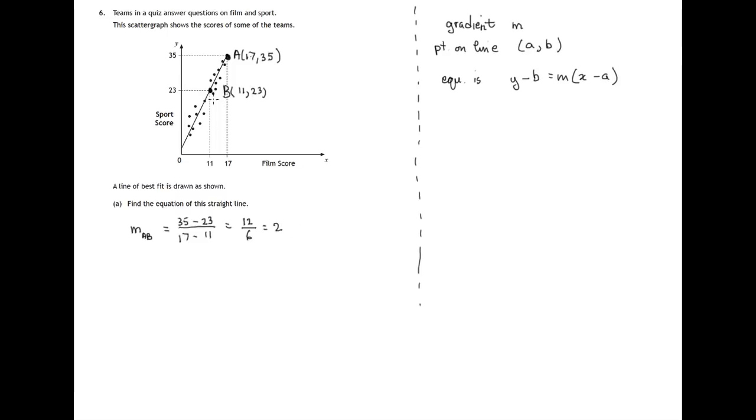And it certainly looks like a gradient of 2, 1 along 2 up. So we've found M, we've found the gradient is 2, point on the line, we can choose either of these two. Let's choose the one with the smaller numbers, 11, 23.